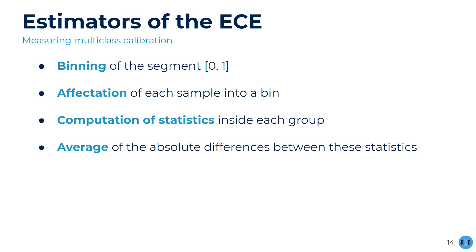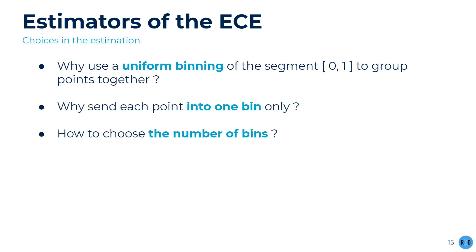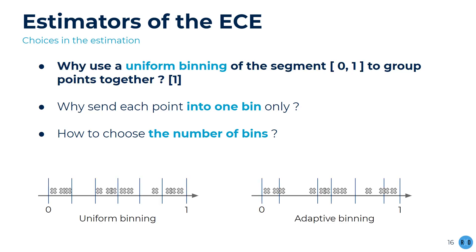Keep in mind that this procedure only produces estimates for the different theoretical expected calibration errors. Some steps in the estimation are pure choices and can be challenged. For example, why use a uniform binning of the segment [0,1]? How to choose the number of bins, which is a sensitive hyperparameter, would be another question. The literature has challenged the first part and proposed to use an adaptive binning instead of a uniform one. This has the advantage of creating groups with the same number of points, so all statistics computed are based on the same number of points. This nice property comes at the cost of higher variance, since the bins are data dependent.